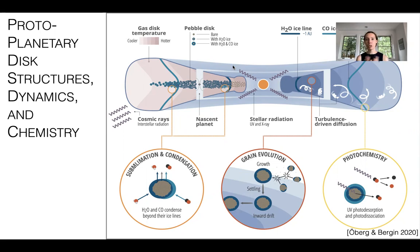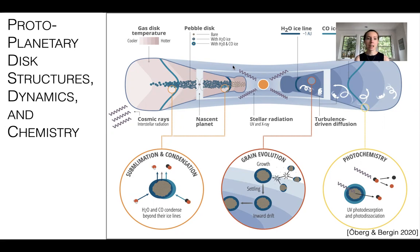As we go closer to the star, it gets hotter, as you would probably guess. As we get towards the surface of these disks, it gets hotter, which means the midplane of the disk is the coldest part. The midplane is where planets form. Dust, as it grows, settles down to the midplane, so you get some vertical segregation between dust and gas. Also pebbles drift inwards, giving some radial segregation between what the gas and dust are doing.